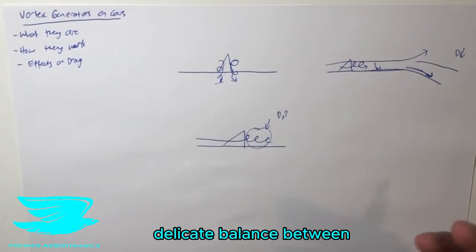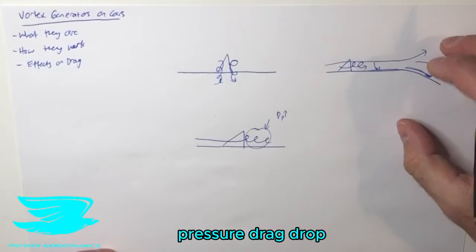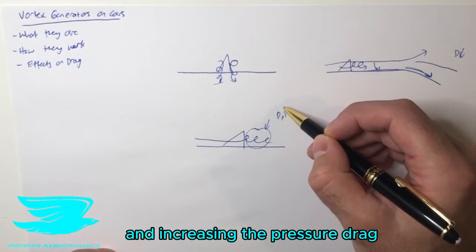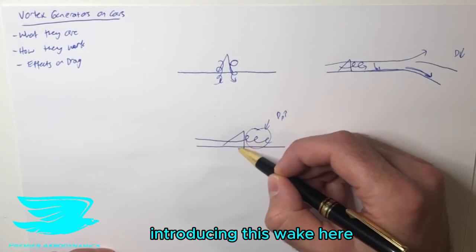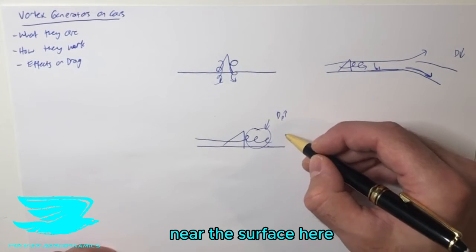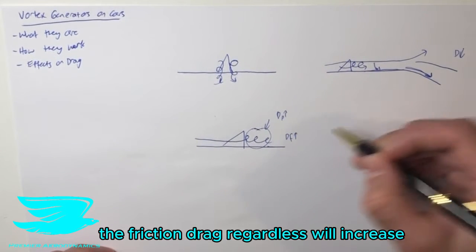So there's a delicate balance between making the pressure drag drop because we are keeping the flow attached, and increasing the pressure drag just because we're introducing this wake here. Also, because we have fast-moving flow near the surface here, the friction drag, regardless, will increase.